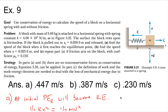As an example, we have a block attached to a horizontal spring with a spring constant of 400 newtons per meter on a frictionless surface. The block is pulled out by 0.05 meters. For part A, we want to find the speed of the block when it first reaches the equilibrium point. When pulled out, it has all potential energy — it's not moving, but there's energy in the spring. Once released, the spring's potential energy gets transferred to the block as kinetic energy by the time it reaches equilibrium.